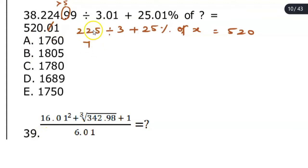7 times 3 is 21, difference is 1. 3 times 5 is 15, plus 25% of x, which is 25 by 100 times x equals 520. This can be taken on the other side, which is 520 minus 75.